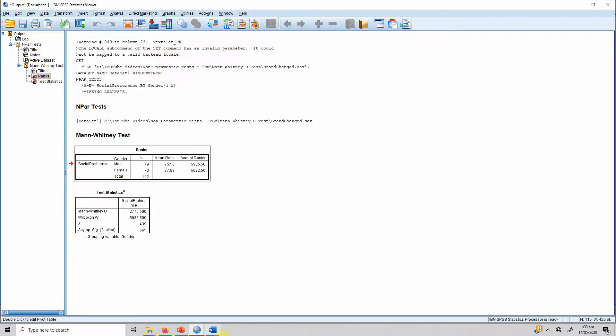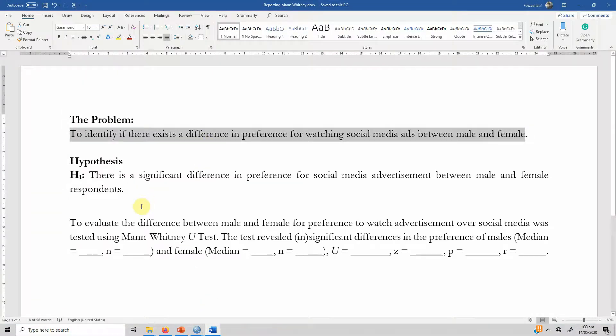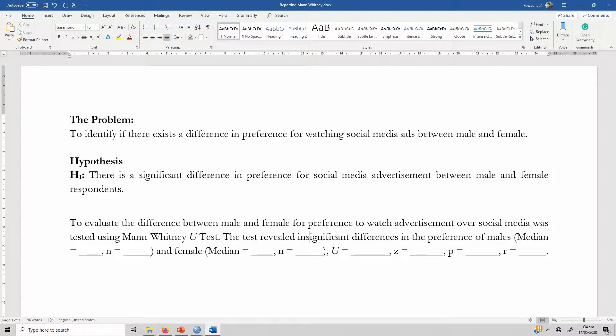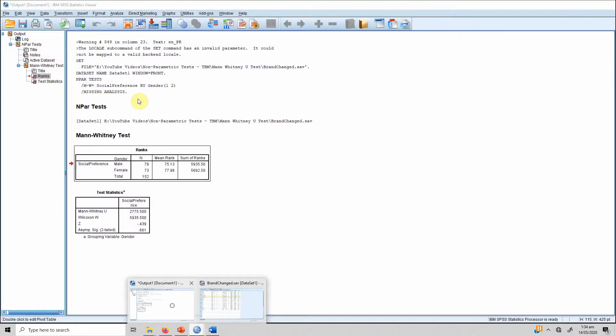What we can do is we can go to this template and see. To evaluate the difference between male and female for preference to watch advertisement over social media was tested using Mann-Whitney U-Test. The test revealed, and in this case it was insignificant, differences in the preference of males. What was the median for male and what was the median for female?